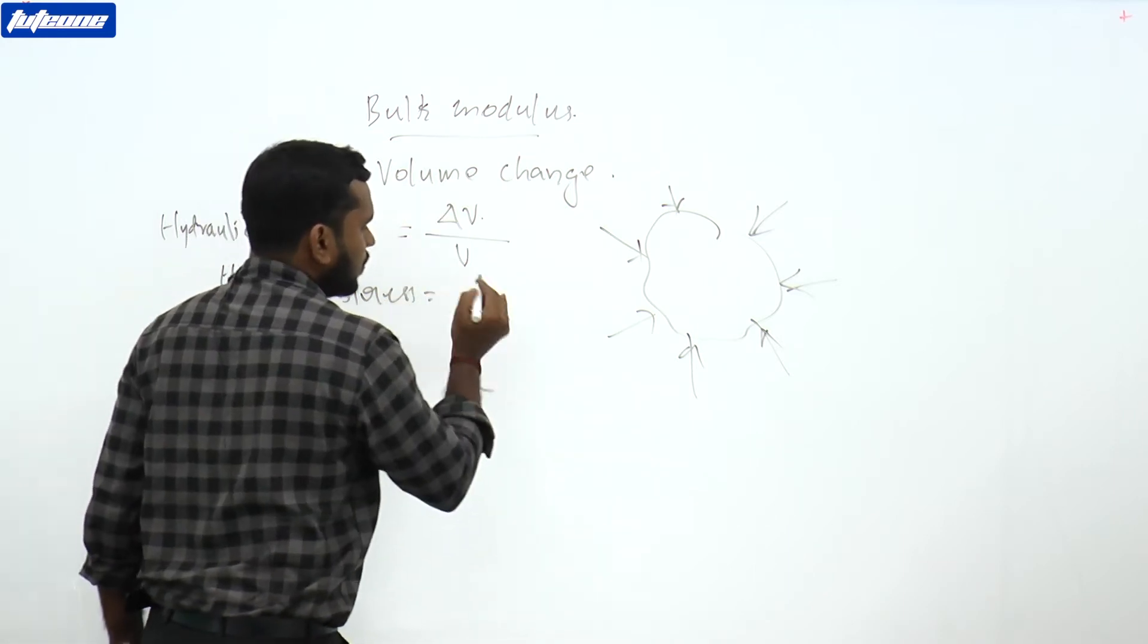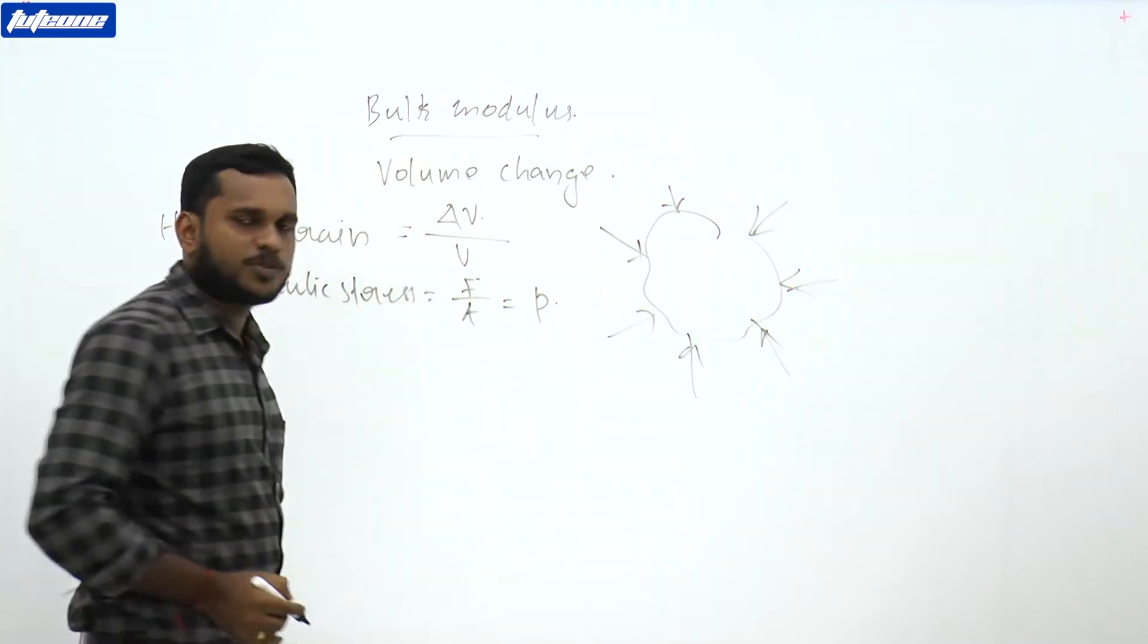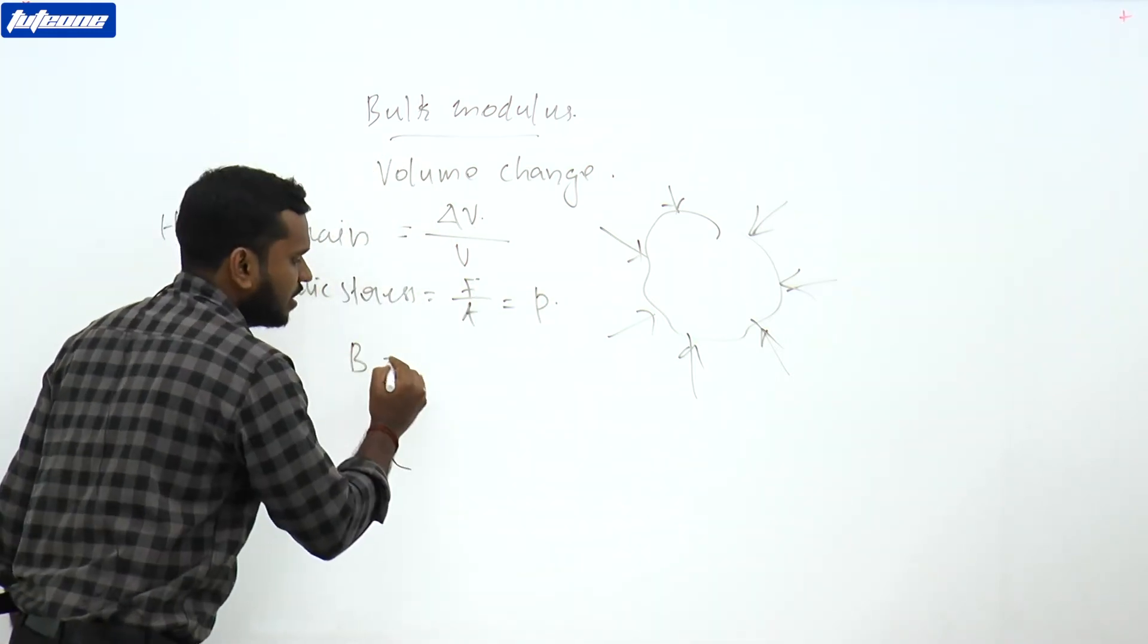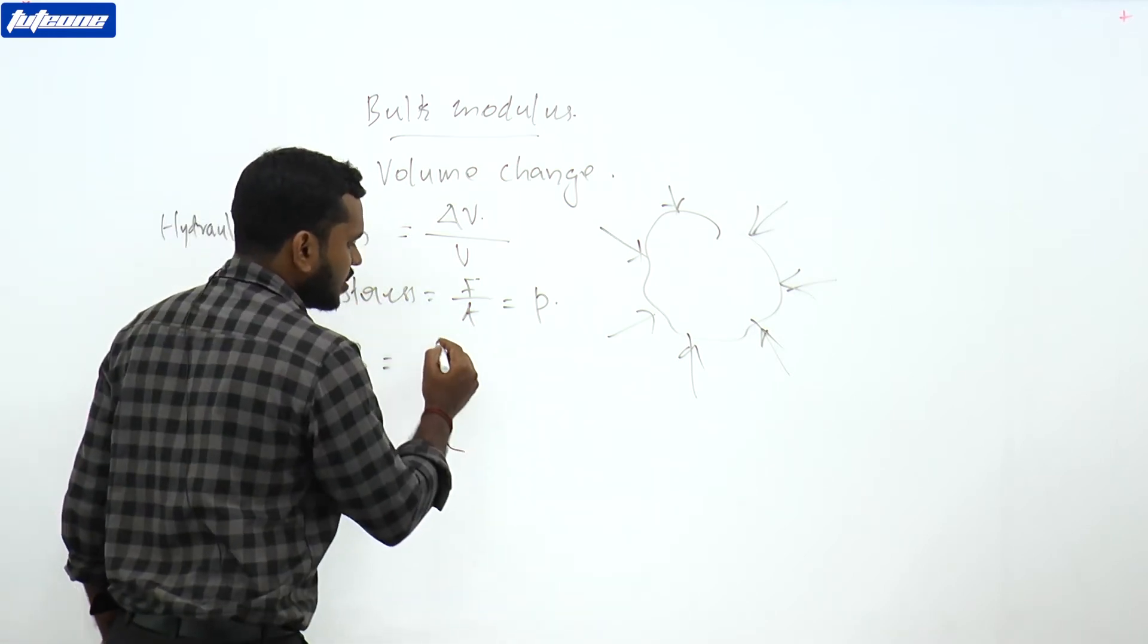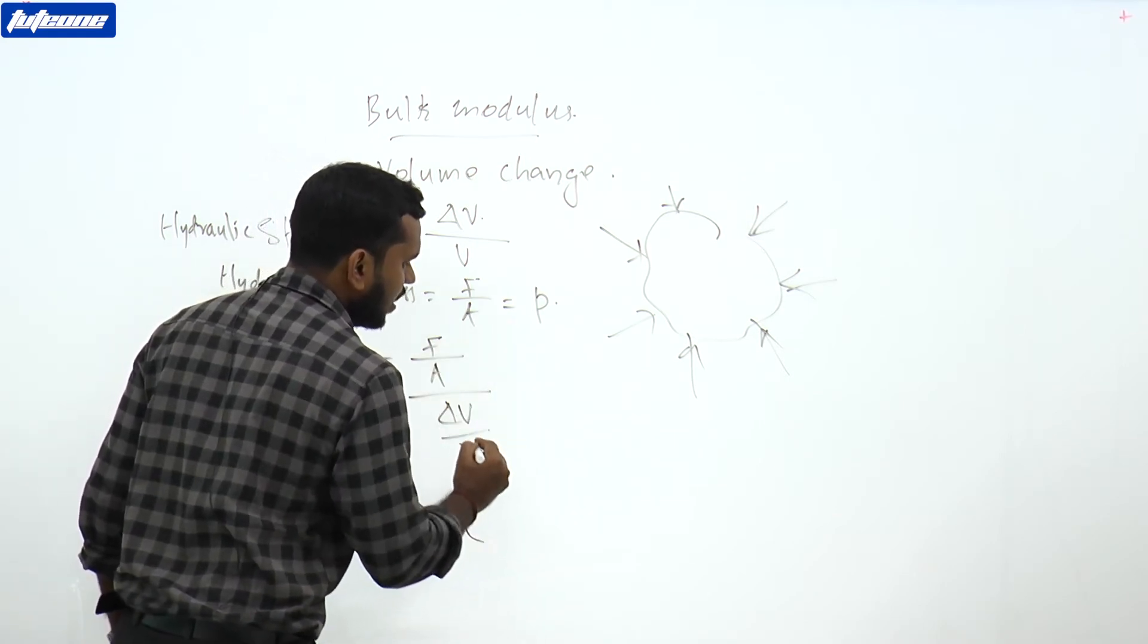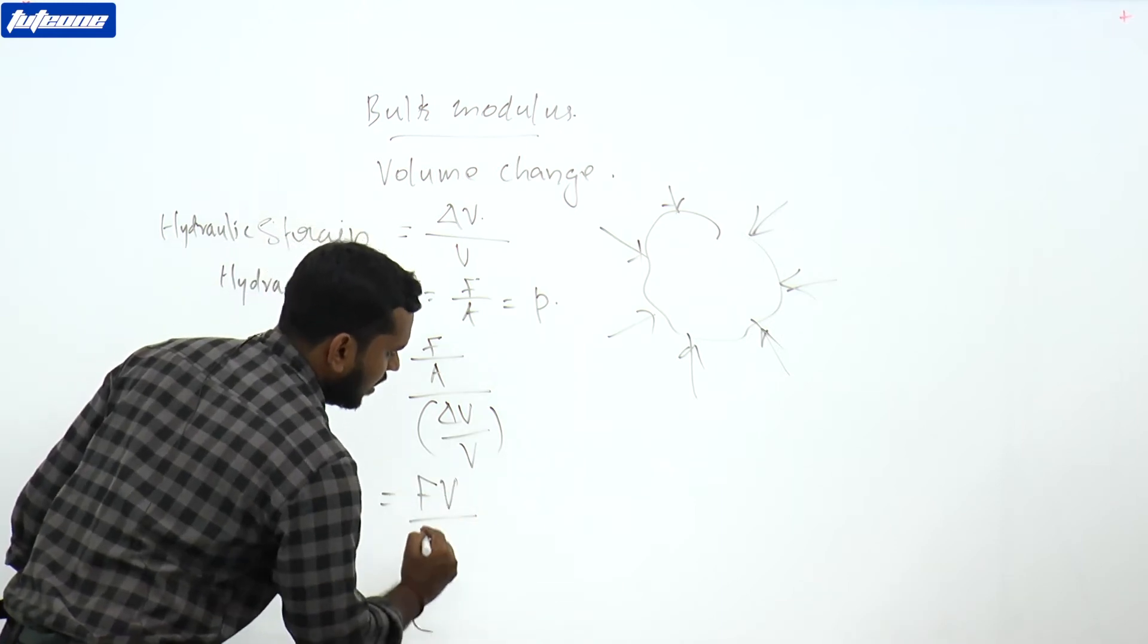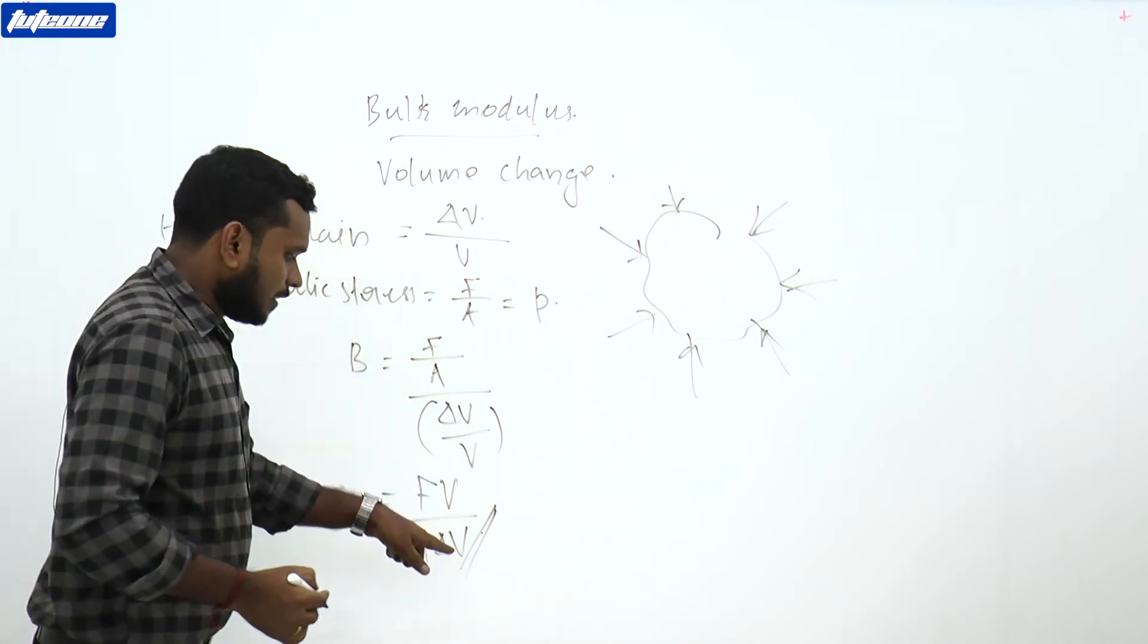Hydraulic stress is equal to force by area, which we can directly call pressure. The bulk modulus B is equal to hydraulic stress by hydraulic strain, that is F/A divided by ΔV/V, or equal to FV divided by AΔV.